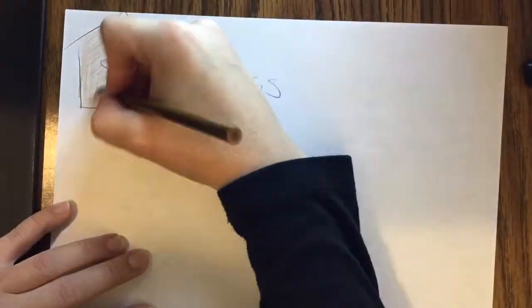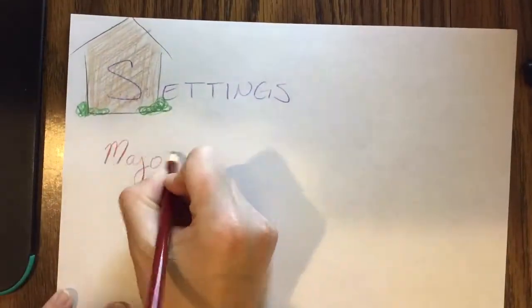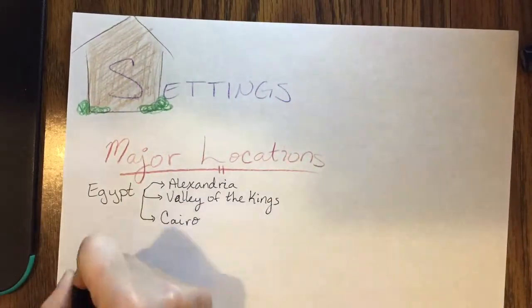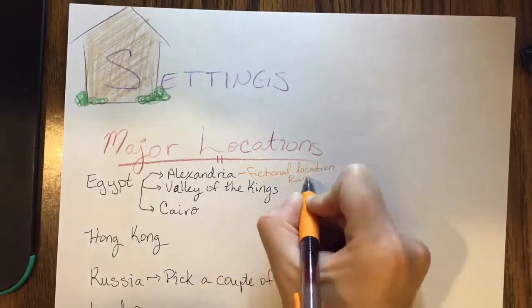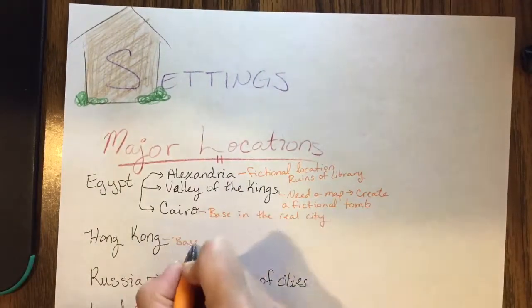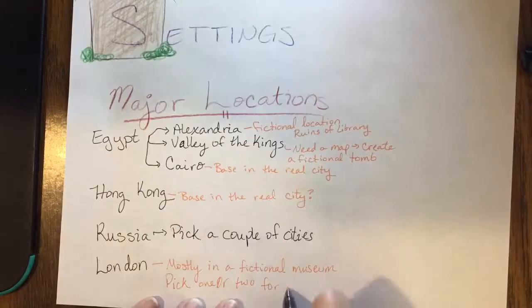So as far as settings go, I really want to focus on what are my major locations. And so I broke it down by what countries I'm gonna be in, because my character, I think I want to be country hopping just a little bit. And so I got the big countries out, and then I went back in and I blocked out, right, what's gonna be fiction.